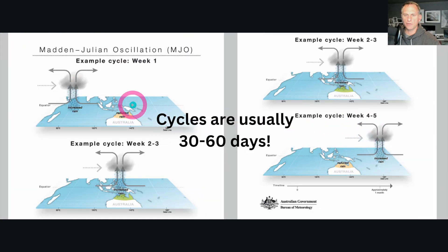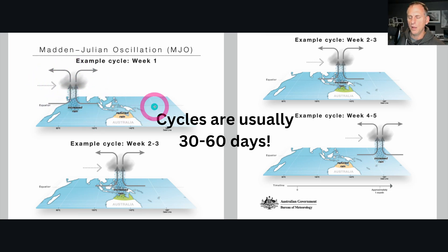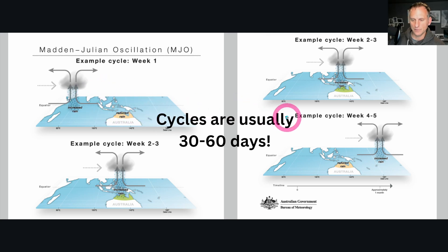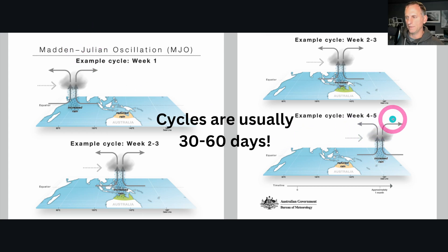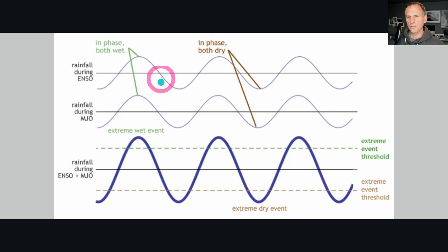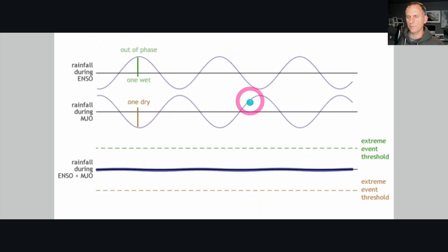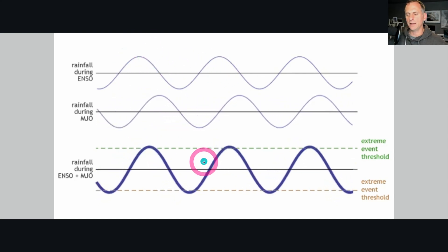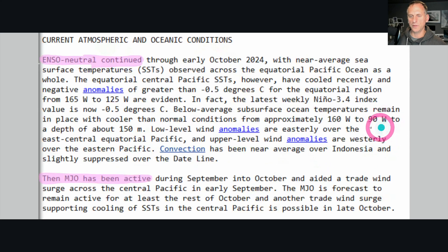This is the Madden-Julian Oscillation — you can see the increased rainfall and cloud cover that cycles around the planet every 30 to 60 days, which is why I said it was sub-seasonal. This can enhance or diminish El Niño or La Niña conditions. On the west coast of North America, we get some rainy periods and sometimes drier and cooler than normal — that's because El Niño and things like the MJO are fighting things out. When they're in phase, you can be abnormally wet or abnormally dry.